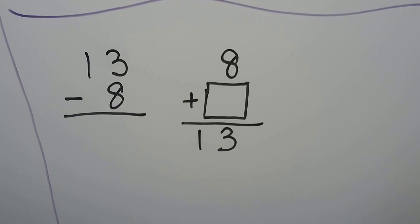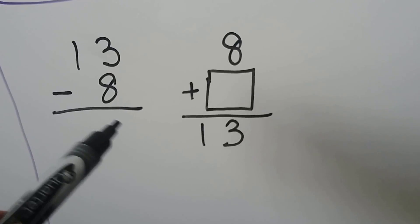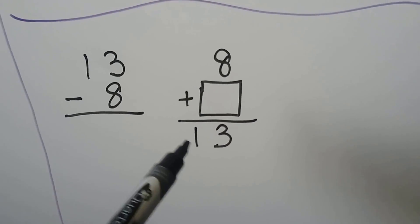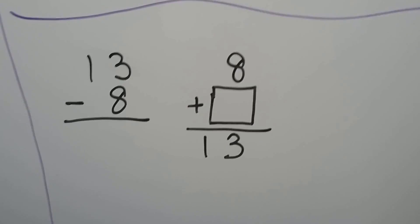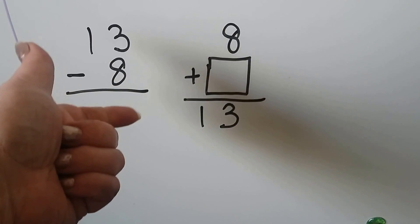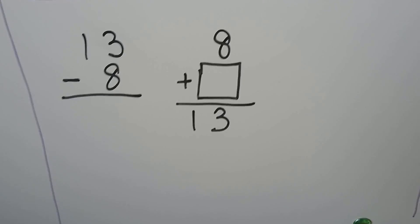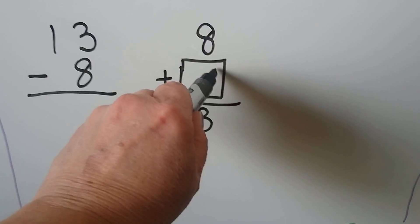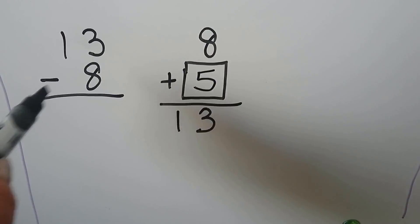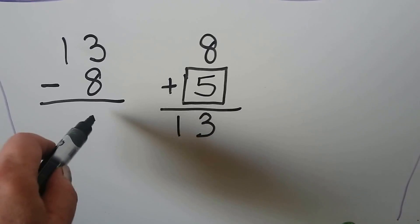13 minus 8. We can add 8 plus some number to equal 13. We can start at the 8 and count on: 8, 9, 10, 11, 12, 13. That's 5. So 8 plus 5 is equal to 13, which means 13 minus 8 is equal to 5.